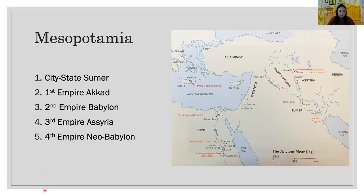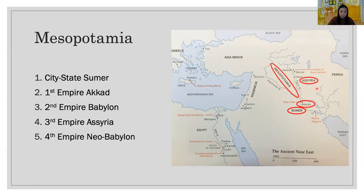The Sumerians built city-states in Mesopotamia first. The first empire was the Akkadian, the second empire was Babylonian, the third empire was built by the Assyrians, and the last empire of Mesopotamia was built by the Babylonians again — it is called Neo-Babylon.